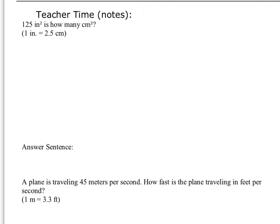Looking at this first problem: 125 square inches is how many square centimeters? Our answer sentence should be: 'It is blank square centimeters.' The interesting thing with square units is that we can treat them just like any other exponents. Centimeters squared is really the same thing as centimeters times centimeters. When canceling out units, we can't cancel centimeters with centimeters squared — we can only cancel centimeters with centimeters.